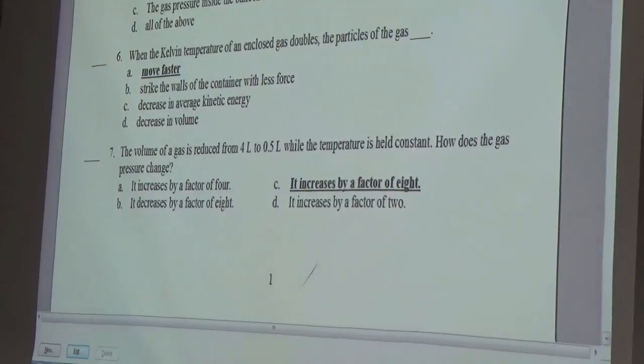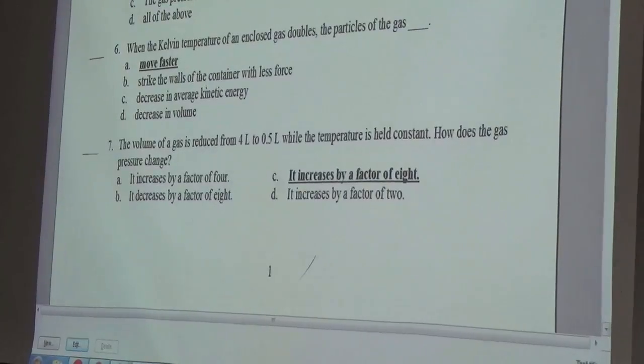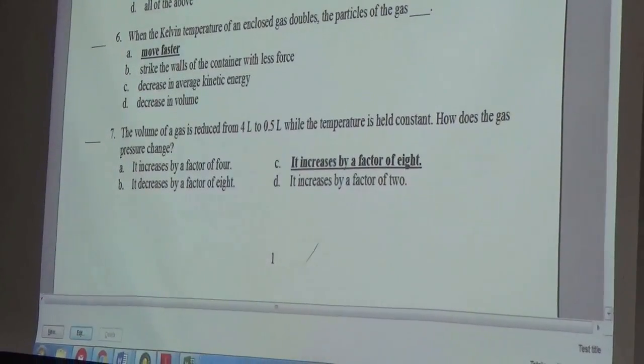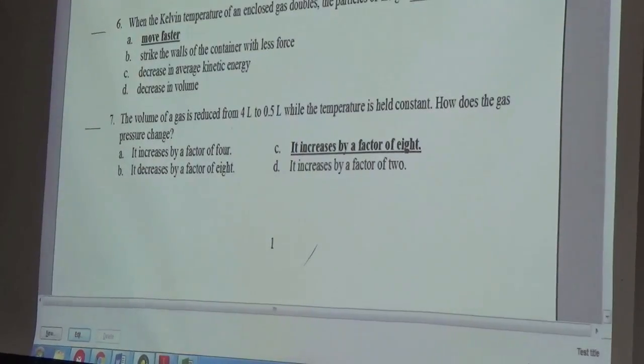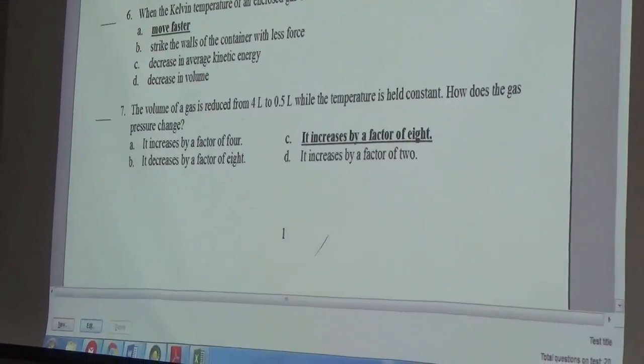The volume of a gas is reduced from 4 liters to 0.5 liters while the temperature is held constant. How does the gas pressure change? C, increases by a factor of 8.